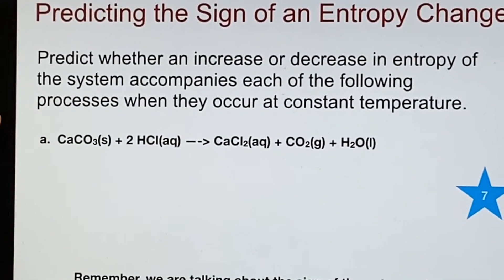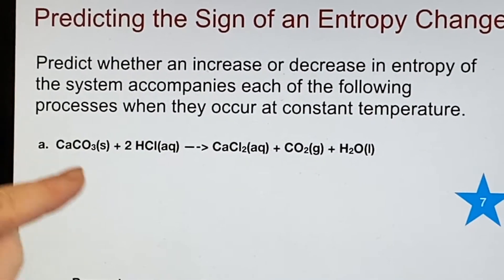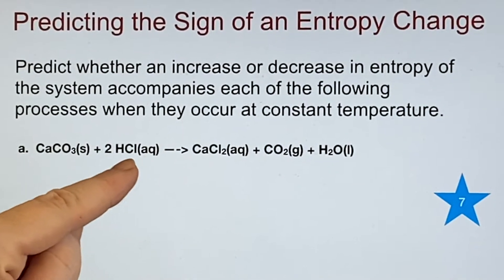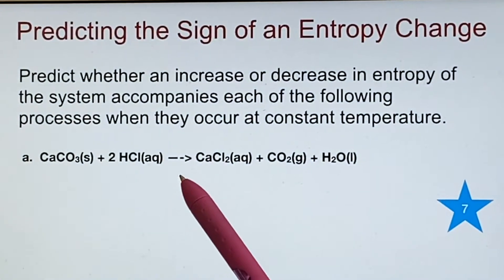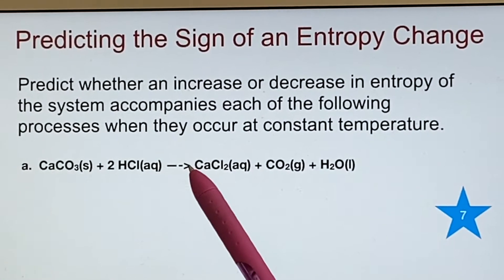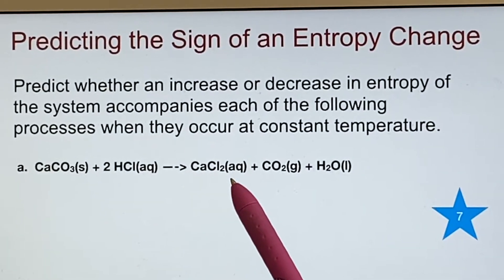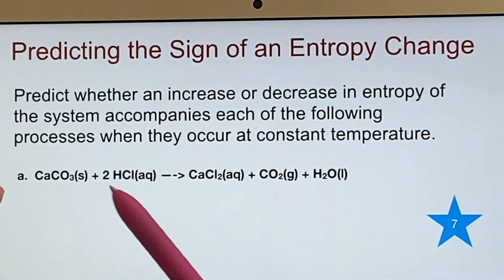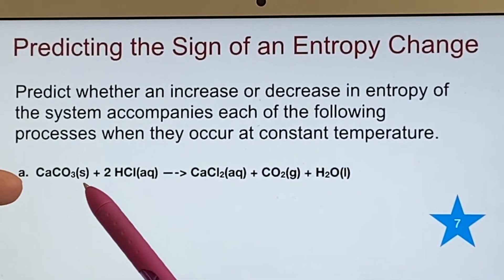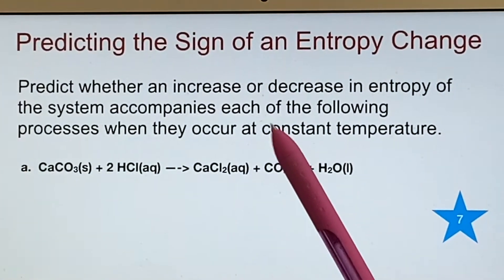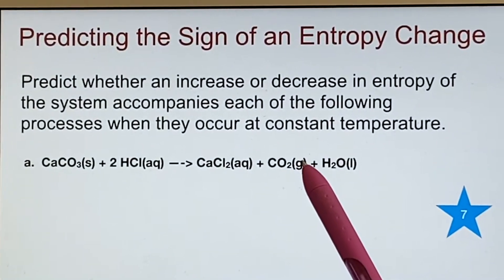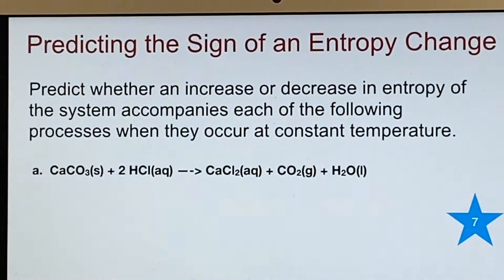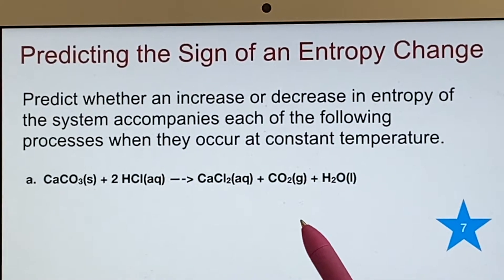If we look at A, we find out that we have a solid and two aqueous solution and that will become one of an aqueous solution, one of a gas and one of a liquid. Well, I can see that I'm changing from solid to gas. I'm going to think that that's going to result in there being more possibilities for position and it should have an increase in entropy.